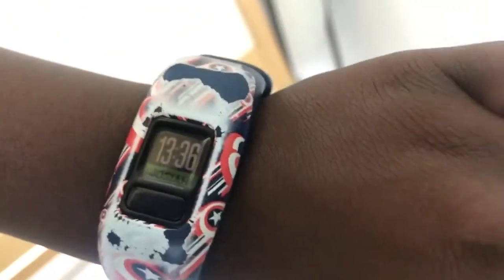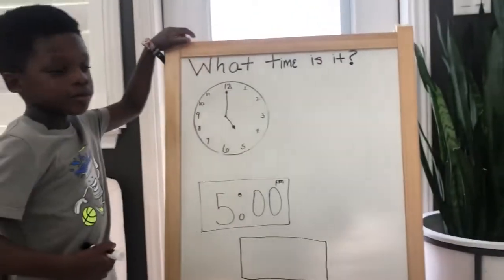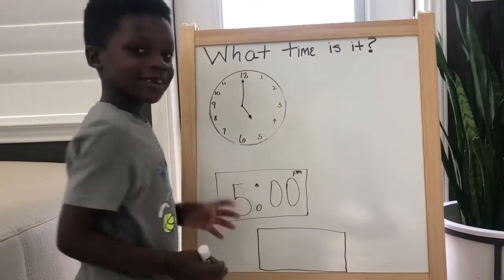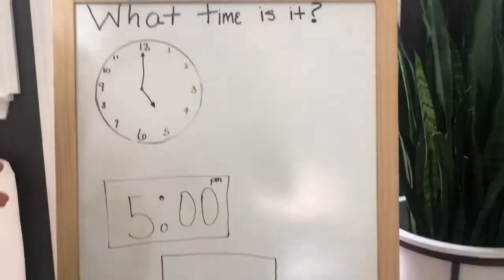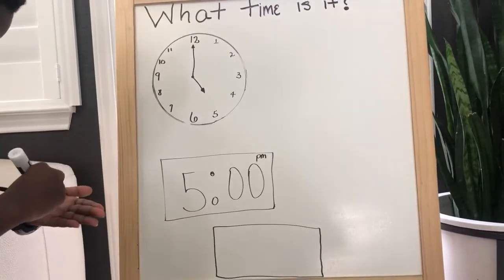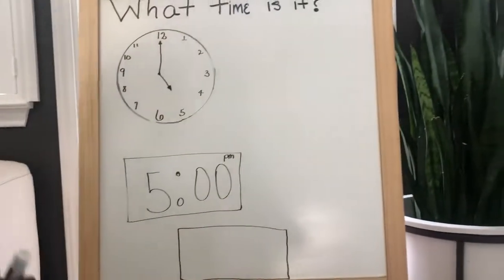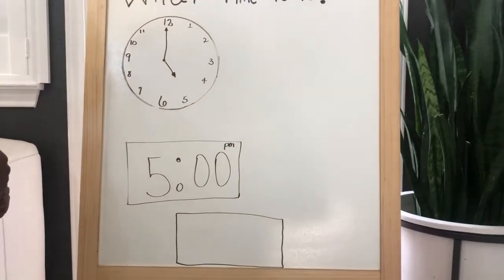So like on digital time it would be—since my clock is military time, it would be 17:00. And then 12 is a new hour because it's like zero. So this would turn into two zeros, so it would look like this: 17:00.